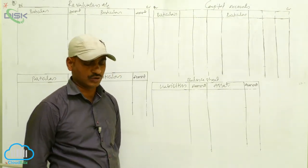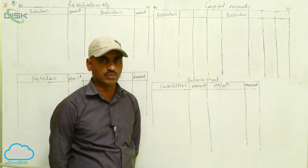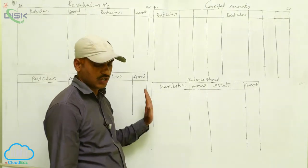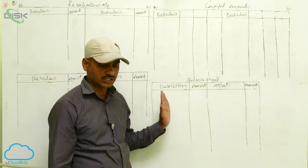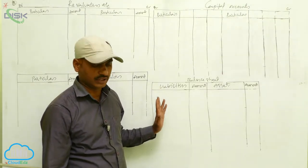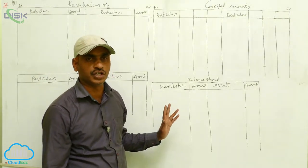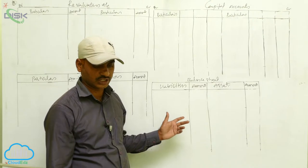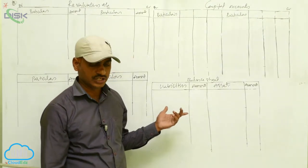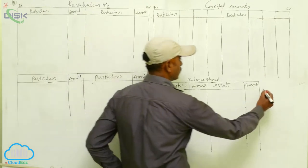It is decided not to raise the goodwill account in the books. So without creating a goodwill account, we have to adjust it. First, we ascertain the retiring partner Moon's share of goodwill. Moon's share is 2/10, so 2/10 into ₹20,000 total goodwill.